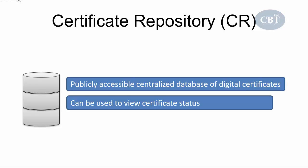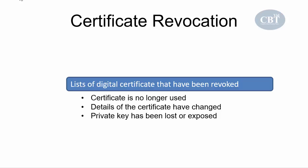All issued certificates have an expiration date — we have that expiration date for security purposes. Sometimes a certificate becomes invalid before that expiration date. For example, the personal information of the requester may change — their name or address — or in the worst case, the private key is stolen and compromised. When the private key is compromised, the digital certificate becomes invalid.